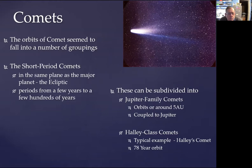Then there are more that have longer orbits, such as Comet Halley, which gives its name to the Halley class comets. That's in a 78-year-long orbit, so it carries it out into the outer solar system.